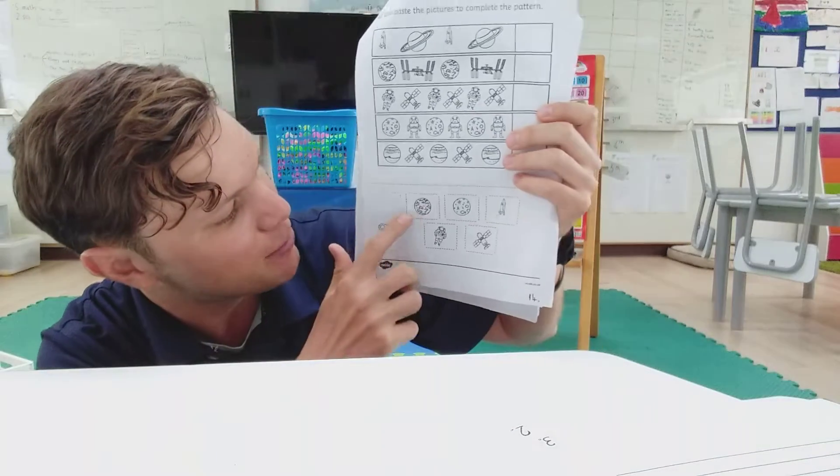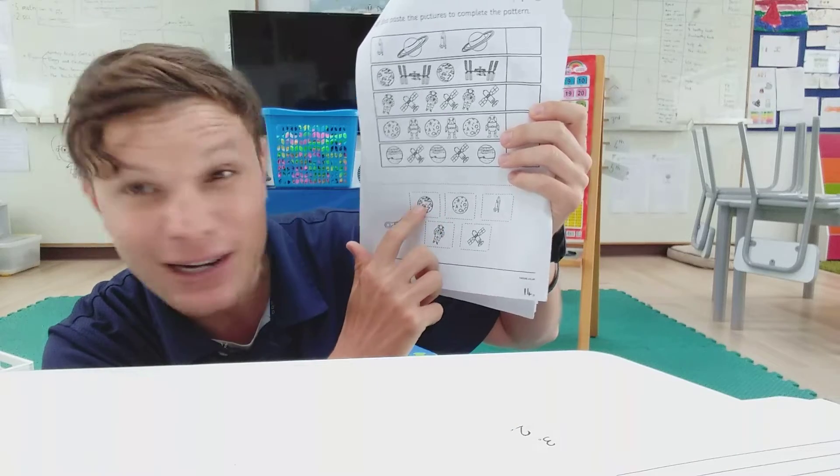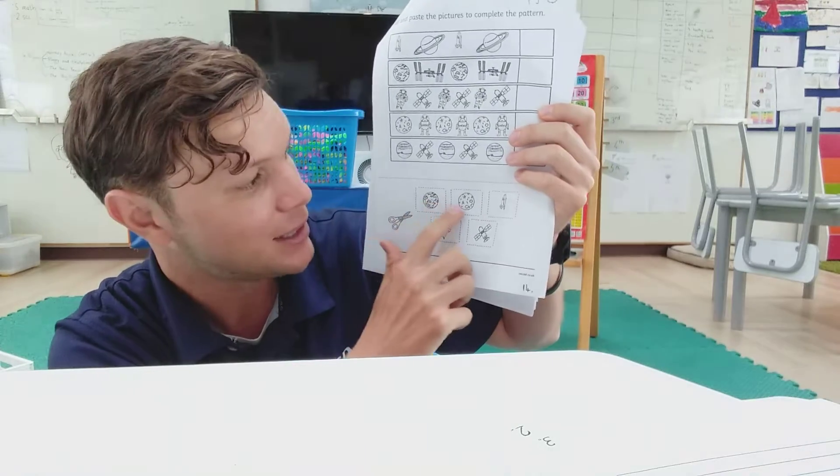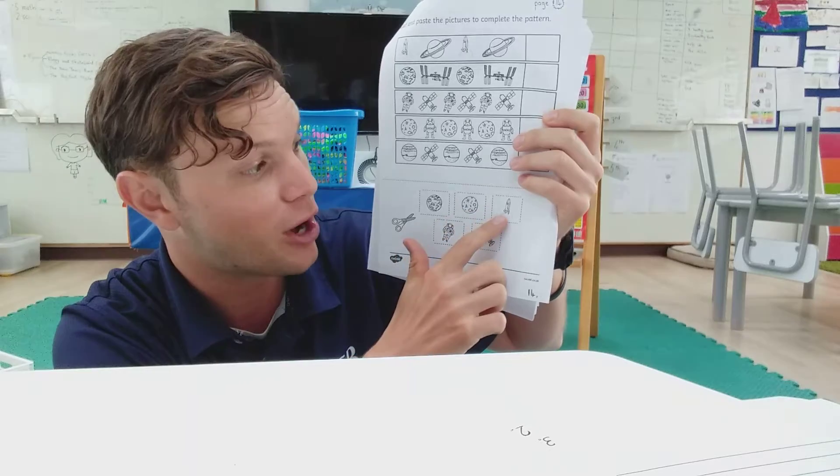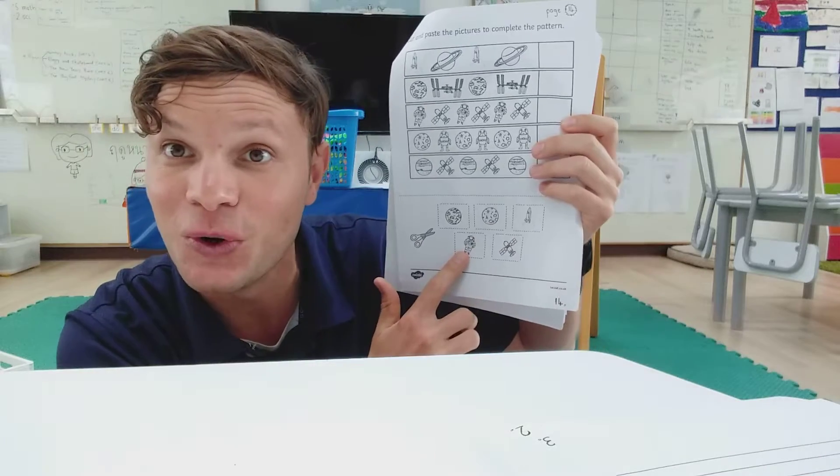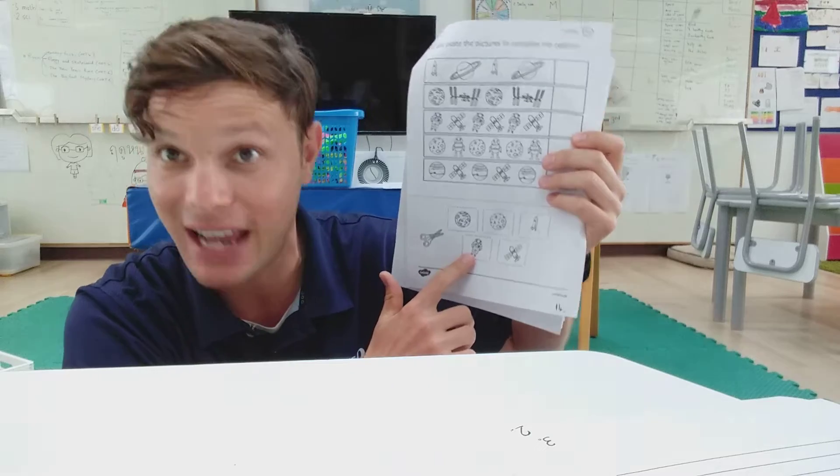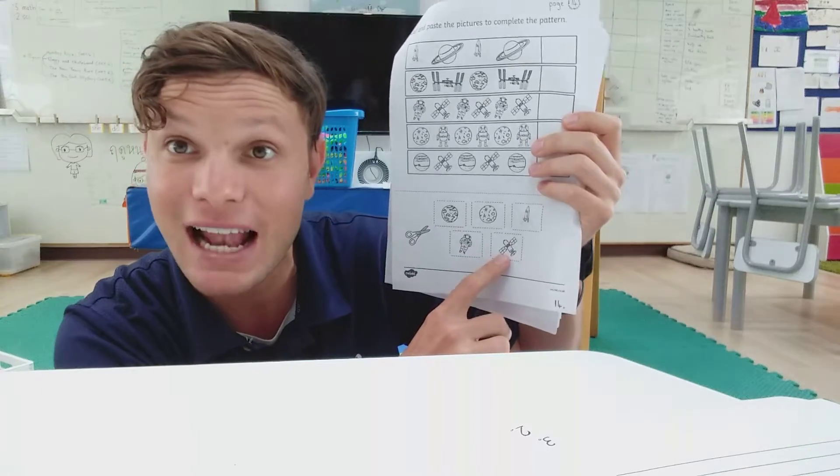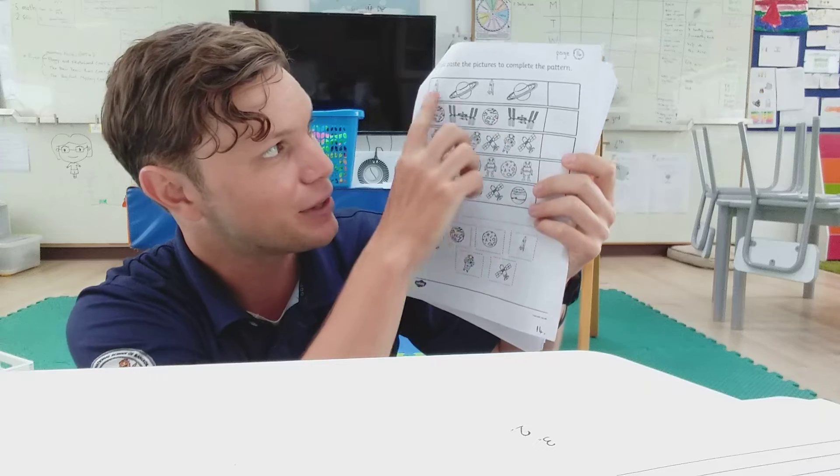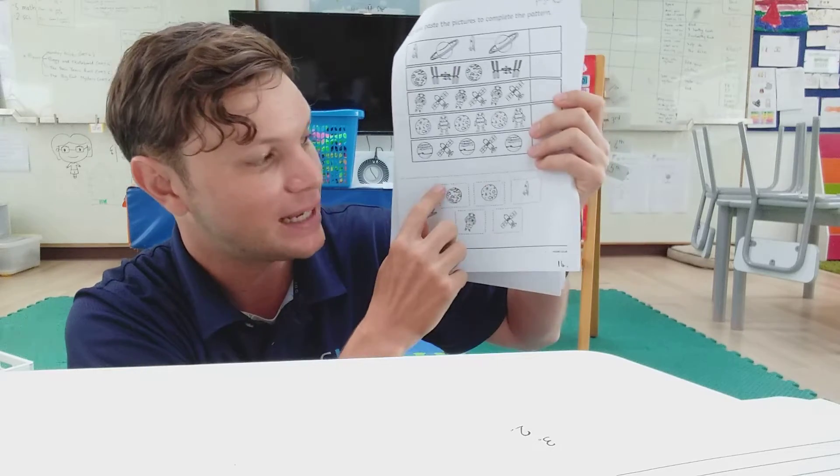We've got at the bottom a planet, a globe in space, right? A planet, a moon, a rocket, an astronaut, someone who goes to space or works in space is an astronaut. And a satellite. And we need to look at the pattern and cut these out and complete the pattern.